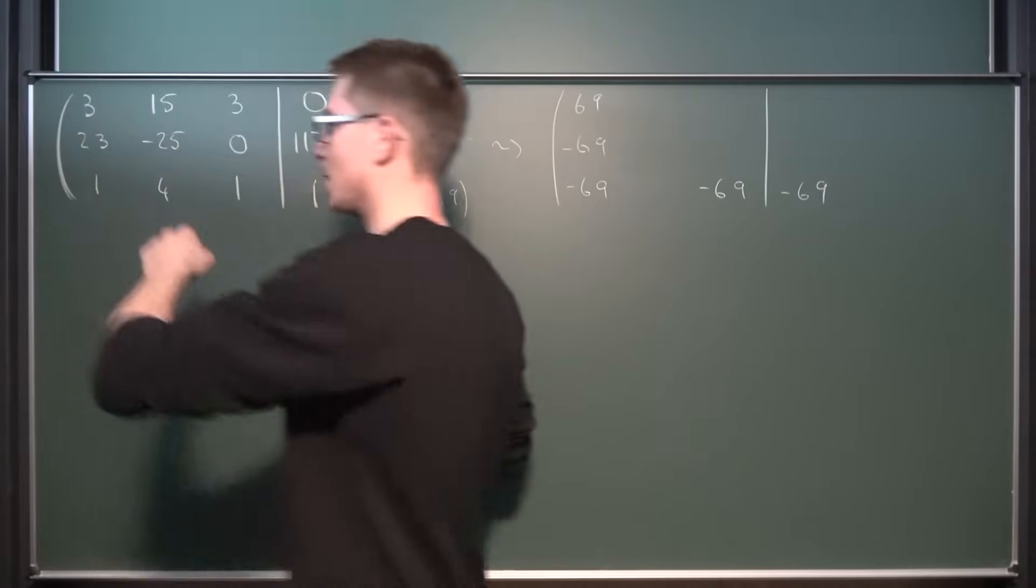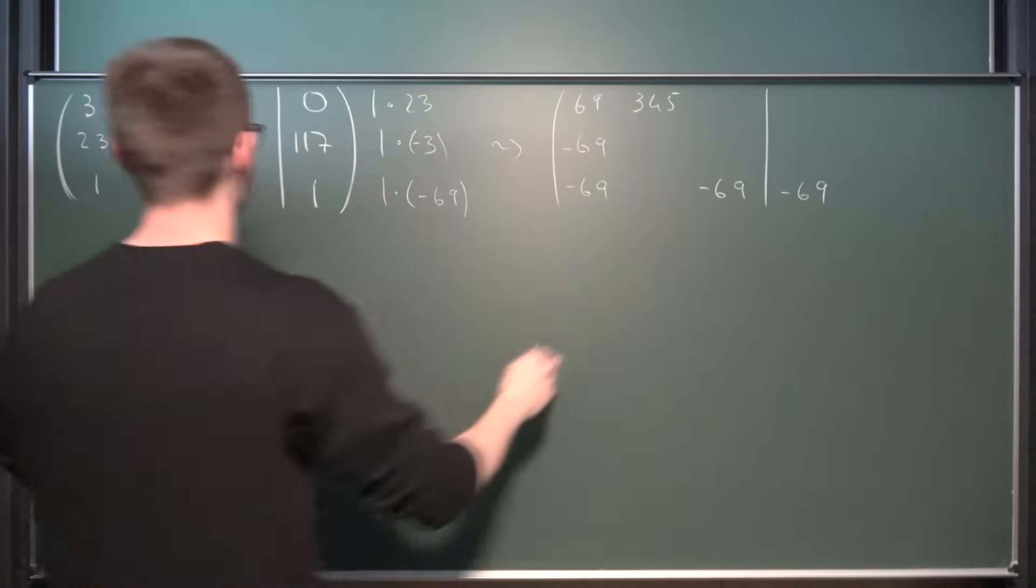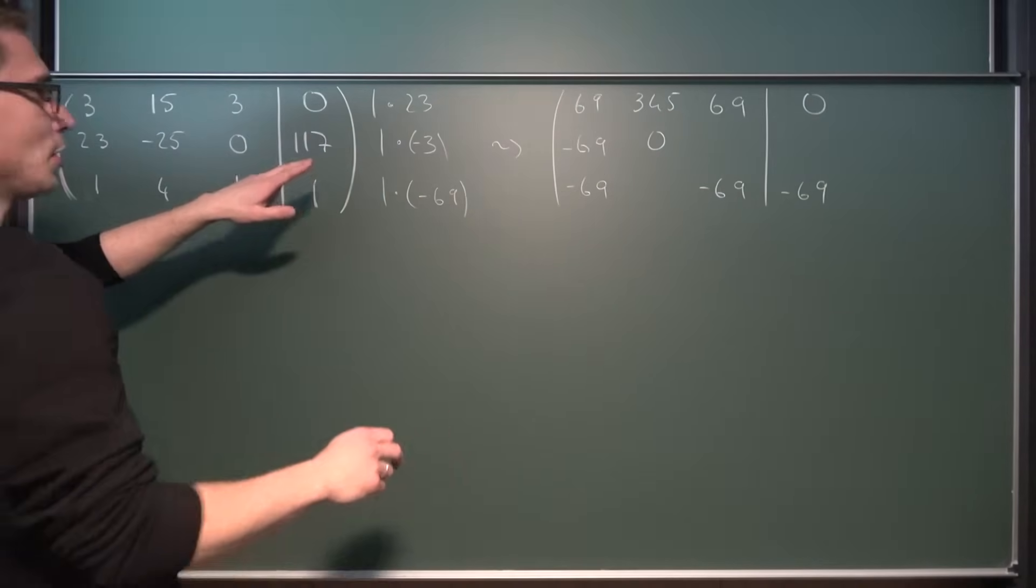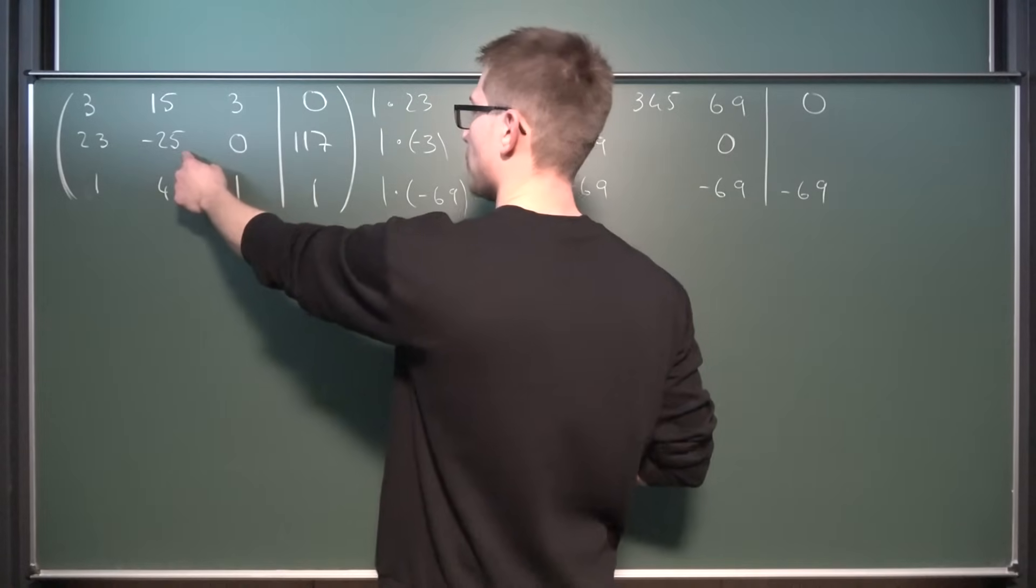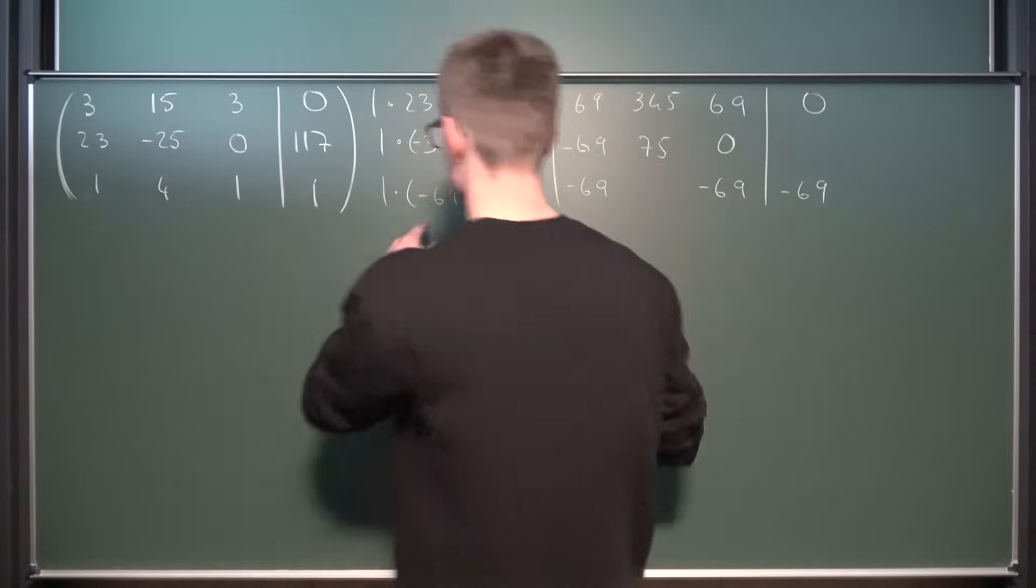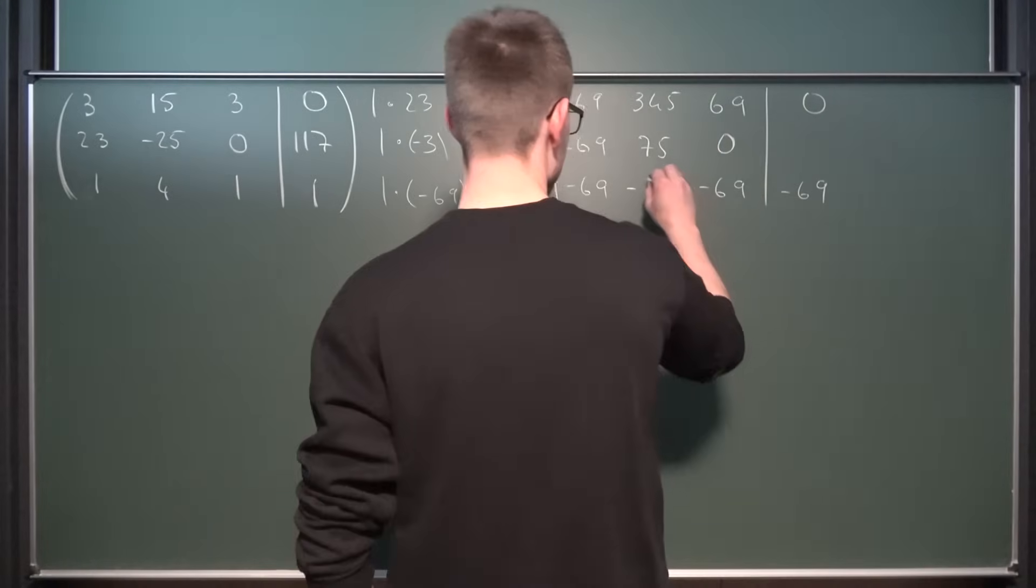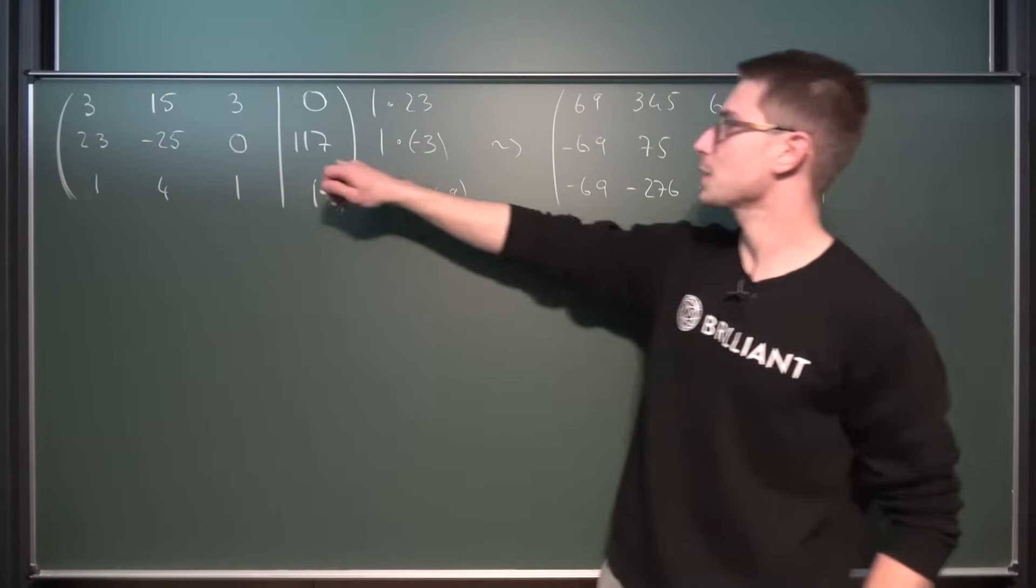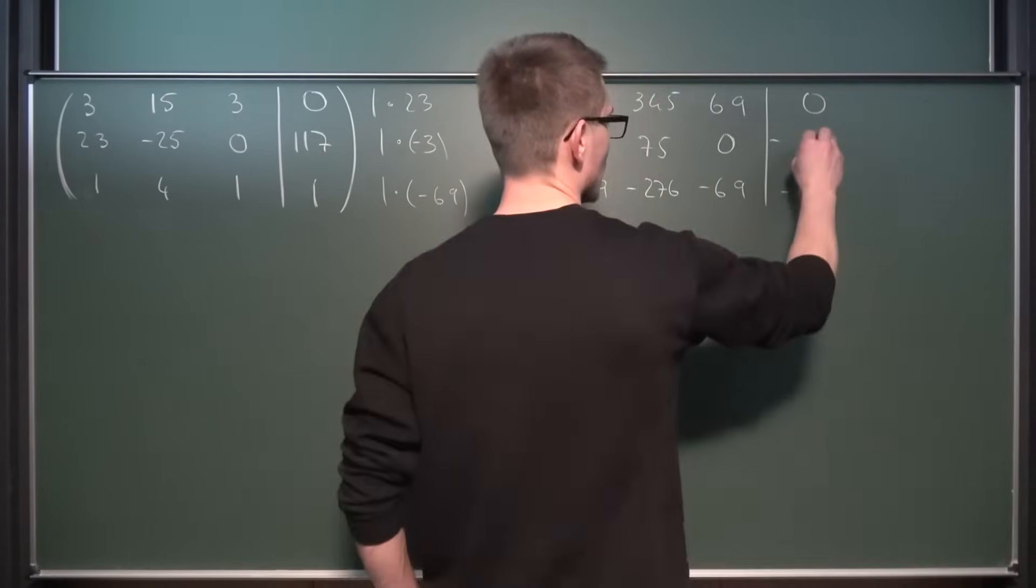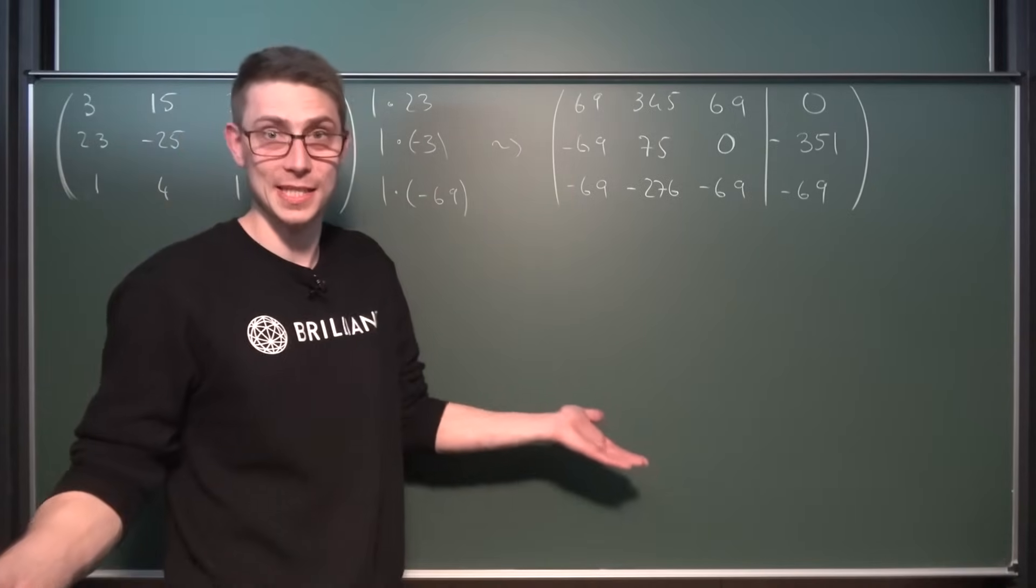Now, if we go ahead and do this, what we are going to end up with is a bit of mental calculations. So we got 69 here, negative 69, we got negative 69. We got negative 69 here and negative 69 here. What we also get is 23 times 15, which is 345. Three times 25 is 75. So we got 69 times 4 with a negative sign, which is 276. And the last one, three times 117 with a negative at the front, is 351. Now this turned into a mess quite quickly, but we got some nice numbers in here. You have to admit that. So we got a lot of 69s going on here, which is very nice.